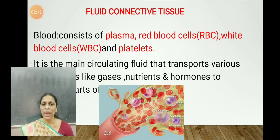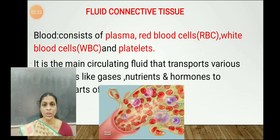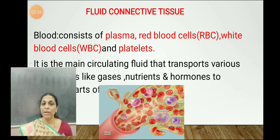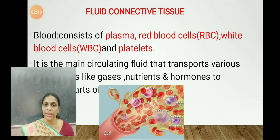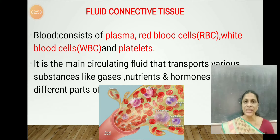Blood is a main circulating fluid. It circulates throughout the body and helps in the transport of various substances like nutrients, respiratory gases, and hormones. It also helps in the transport of chemicals and excretory substances to various parts of the body. Respiratory gases like carbon dioxide and oxygen are also transported by the blood.